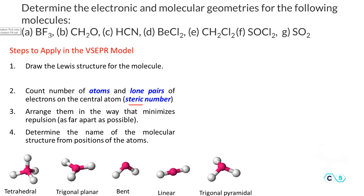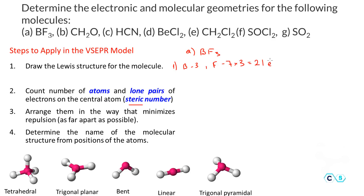Let's start with molecule A: BF3, boron trifluoride. Drawing the Lewis structure, we find the valence electrons: boron is in group 3 with 3 electrons, and fluorine is in group 7 with 7 electrons. We have 3 fluorines, so that's 21 electrons from fluorine. Together the total is 24 electrons, which we must arrange into a Lewis structure according to the rules.